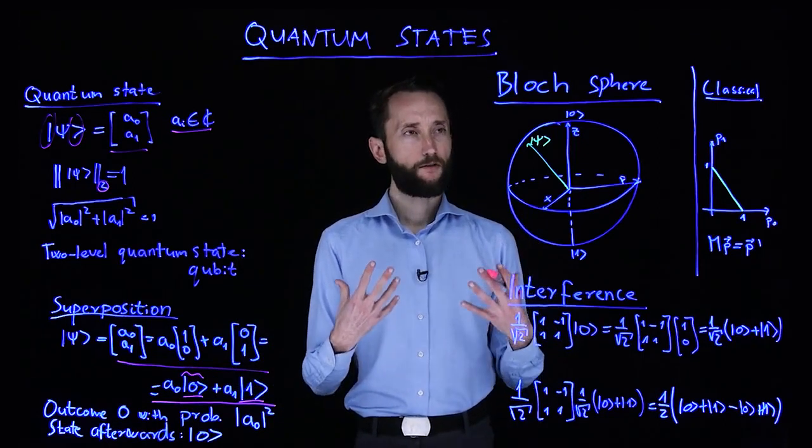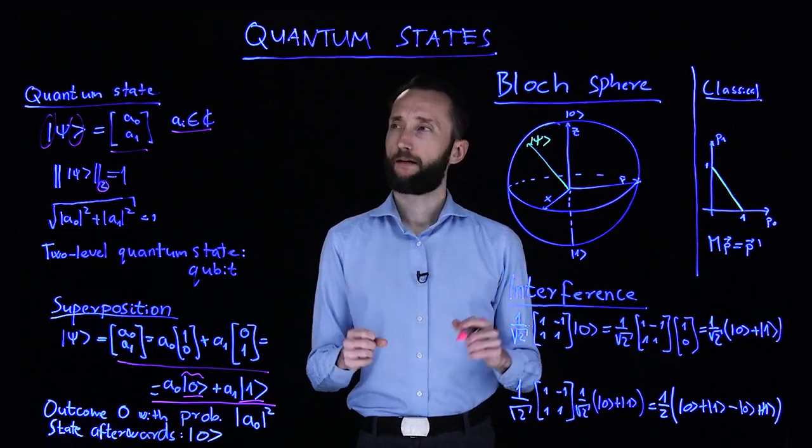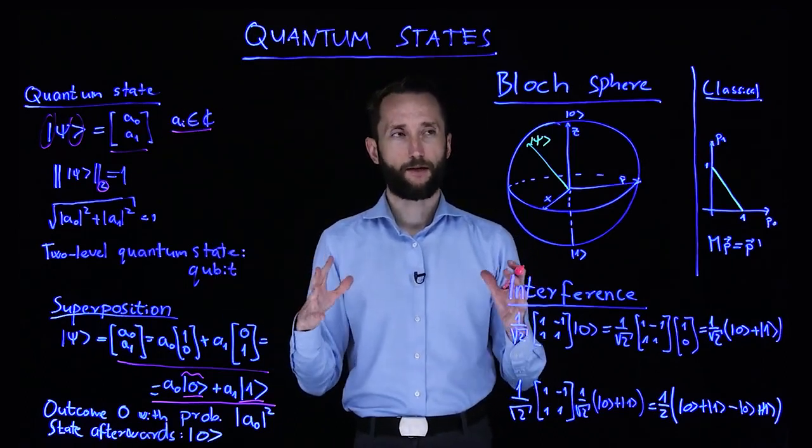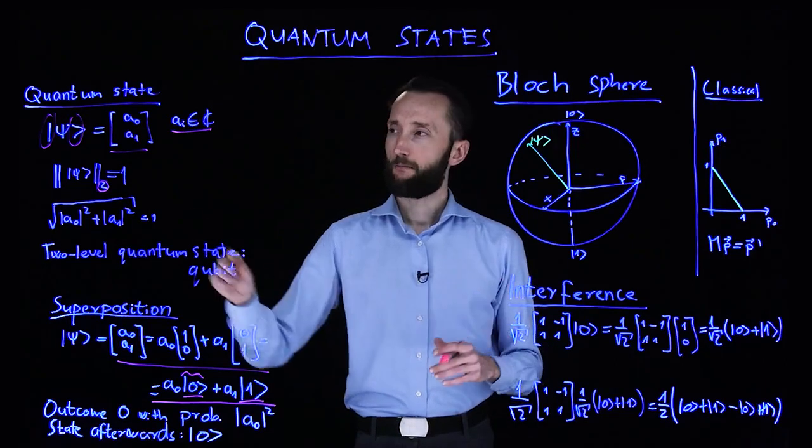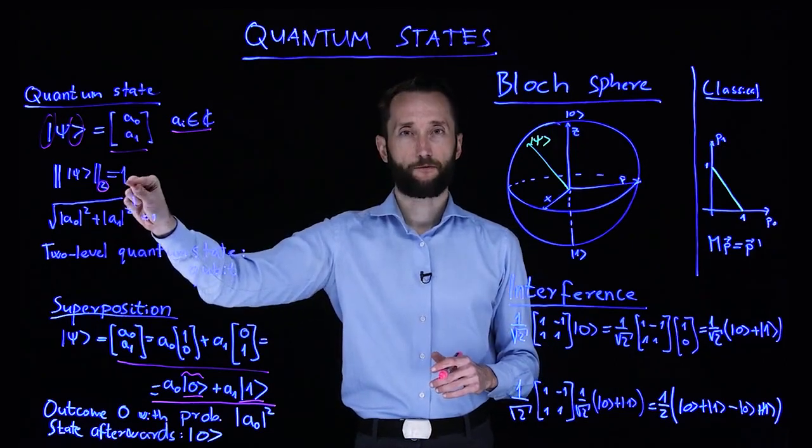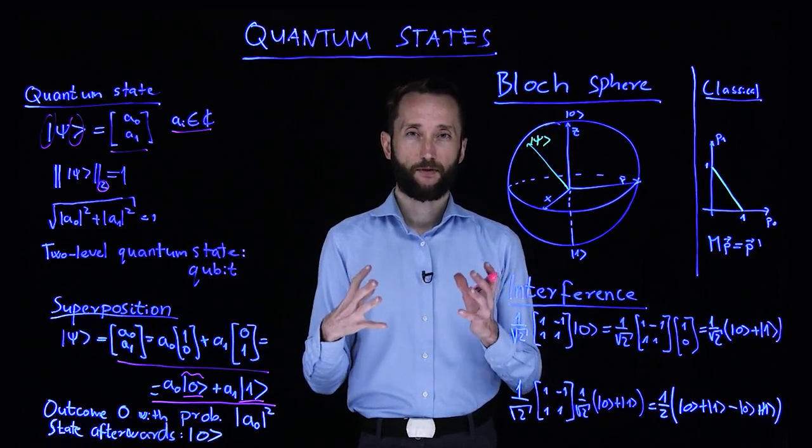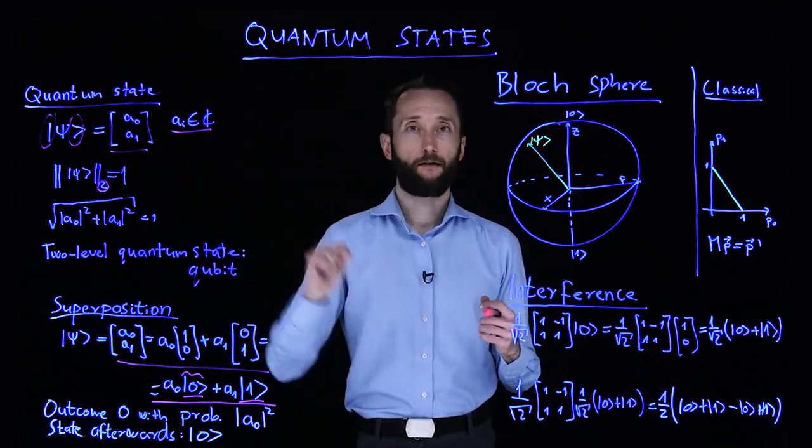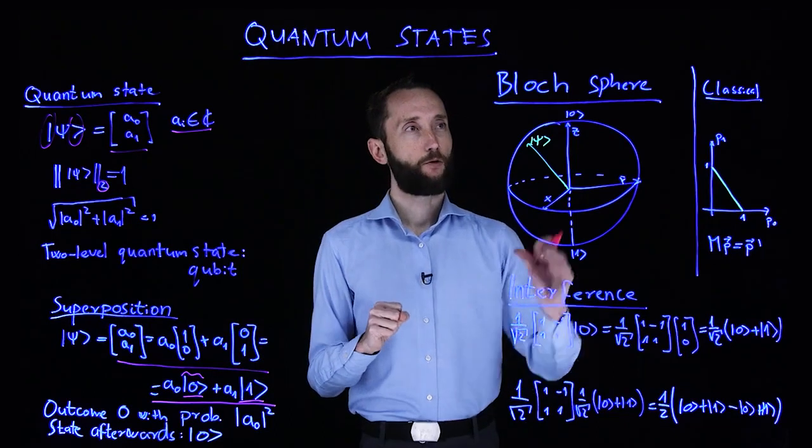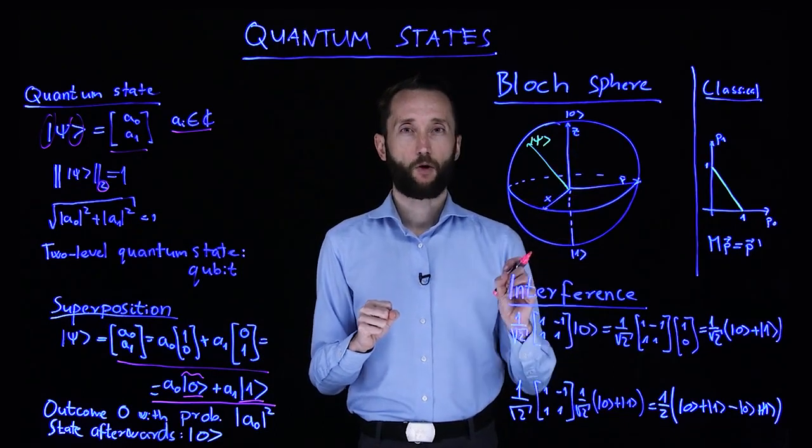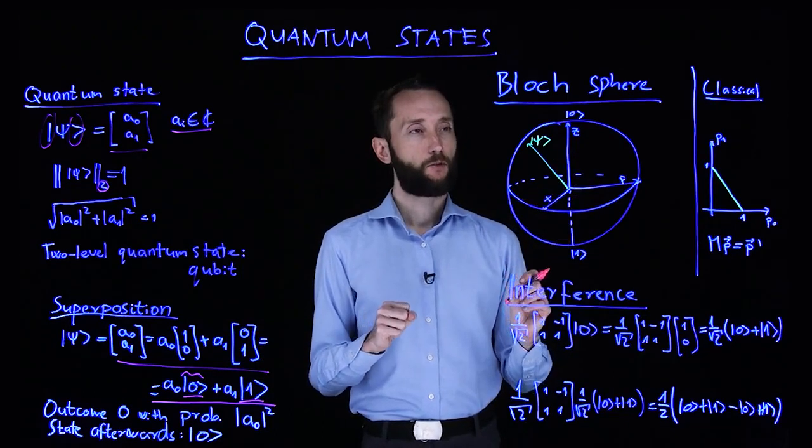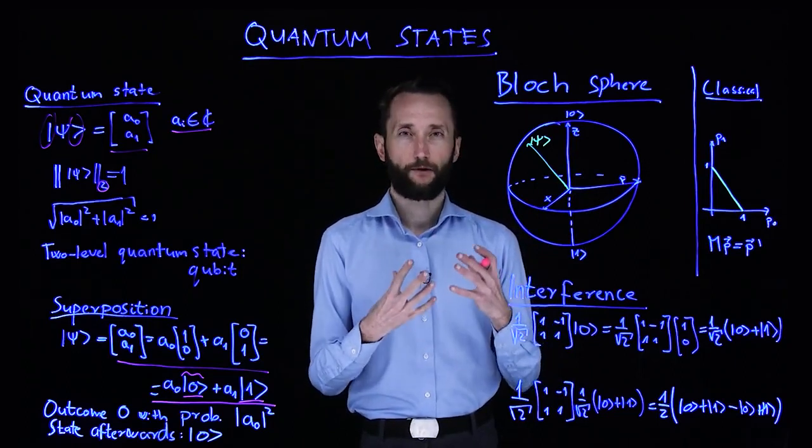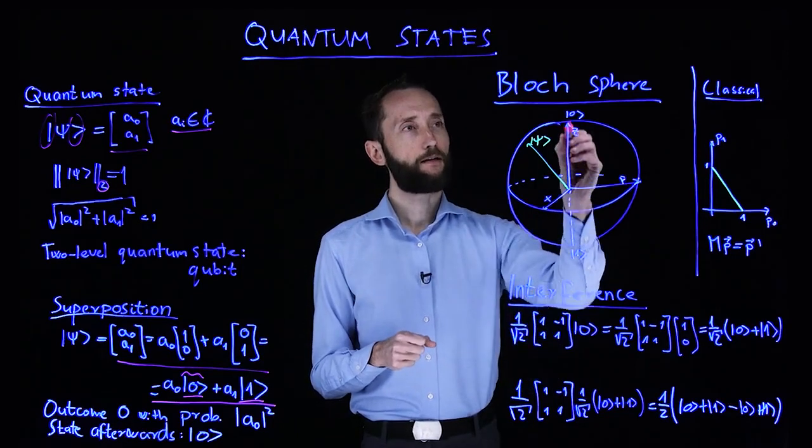So you can also think about it in a more geometric way. Now you have a two-dimensional complex space, which would take up four dimensions to visualize. But we have this restriction on the degrees of freedom, so we can have some three-dimensional object representing these qubit states. This is where the Bloch sphere helps us. The Bloch sphere is this three-dimensional sphere.